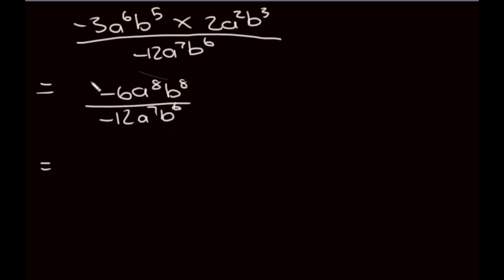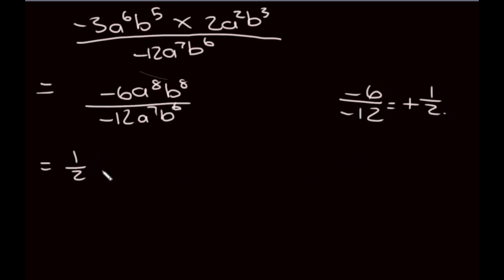Our numerator is now smaller than our denominator. For the numbers: negative 6 divided by negative 12 — negative divided by negative gives a positive — and simplifying the fraction gives one half. For a: 8 minus 7 leaves a to the power of 1, so just a. For b: 8 minus 6 gives b to the power of 2. So our final answer is one half times a times b squared. That concludes the video lesson for today.